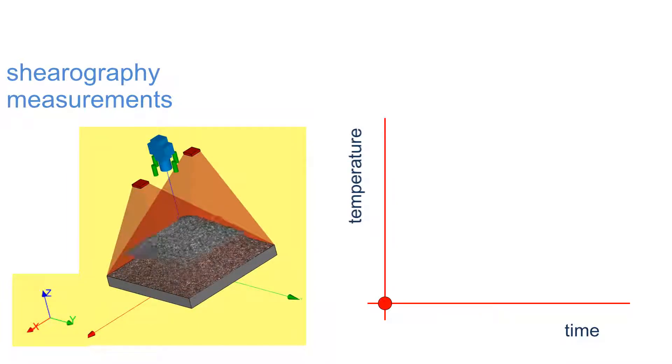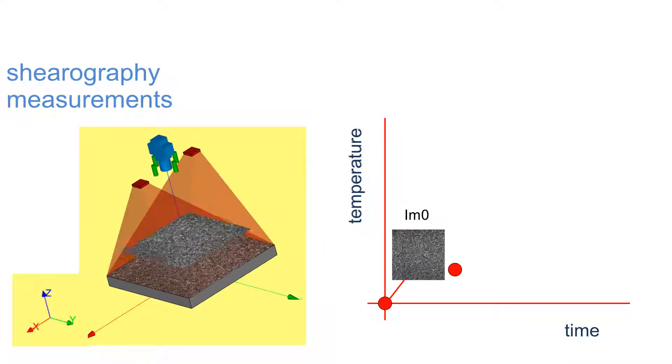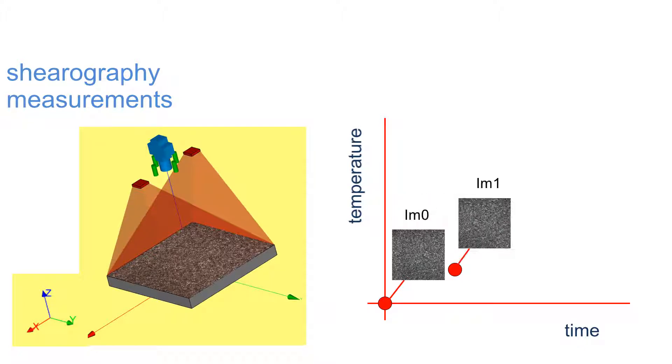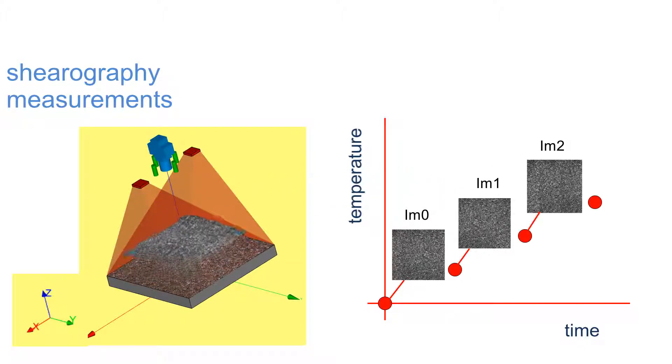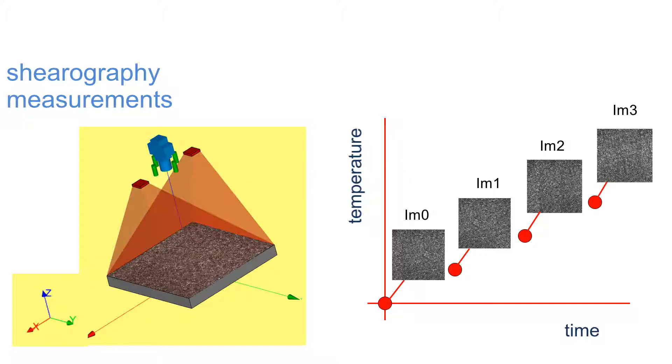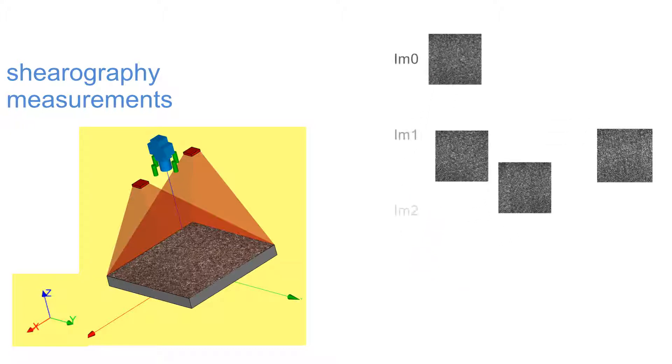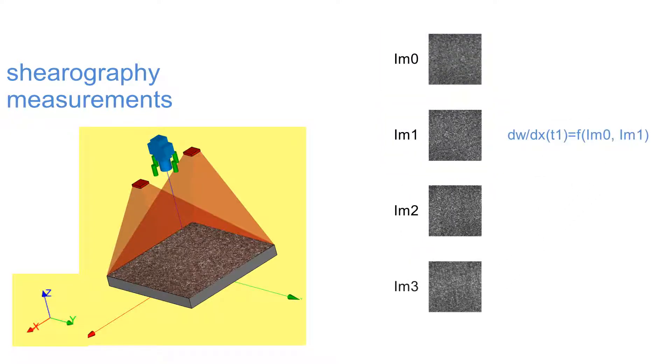A series of speckle patterns are taken during heating of the test object. After image processing of all these speckle patterns, we have out-of-plane displacement gradient data in every point of the object surface.